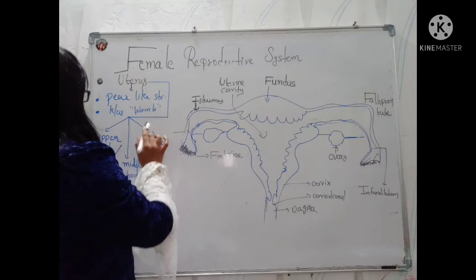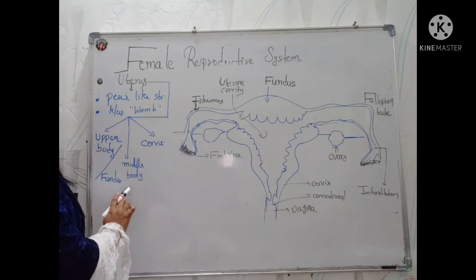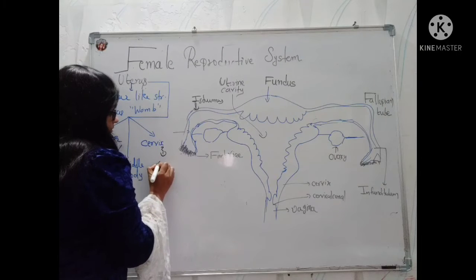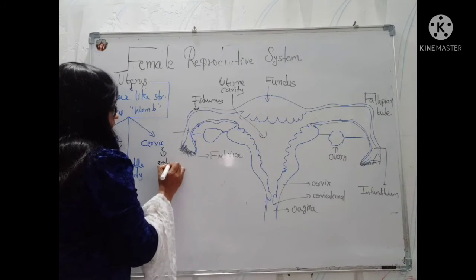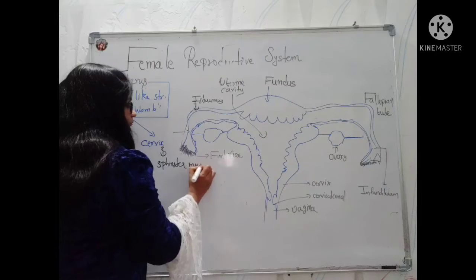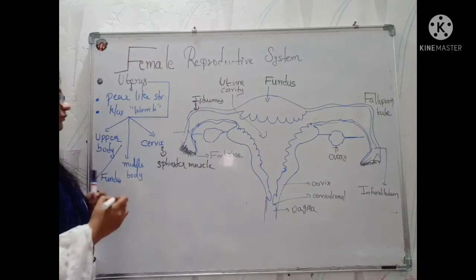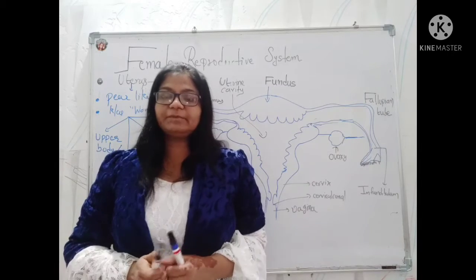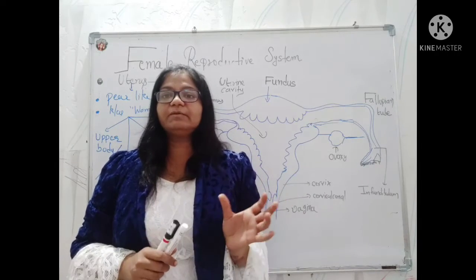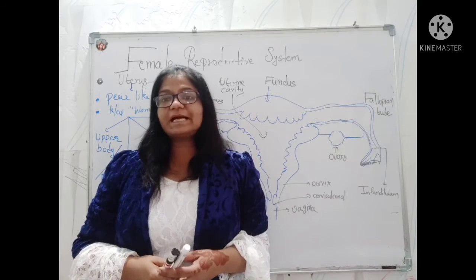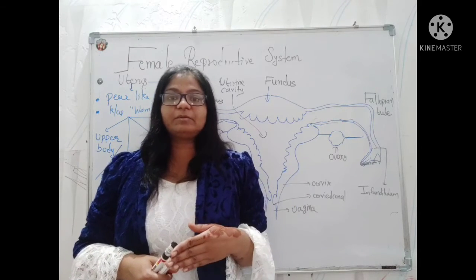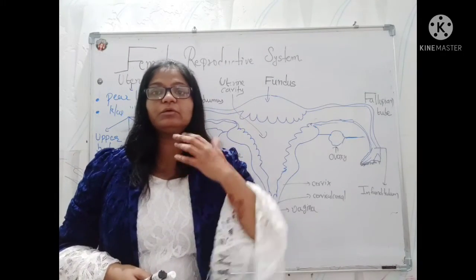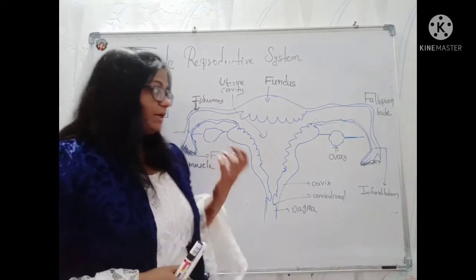So the uterus has been divided into three main portions: upper body, middle body, and the cervix. The cervix has sphincter muscles which are responsible for moving the fetus toward the vagina. We can also say the cervix is the connective link between the uterus and vagina, helping the fetus to travel toward the vagina at the time of parturition. The fundus is the main portion of the uterus where the whole fetal development is going on.